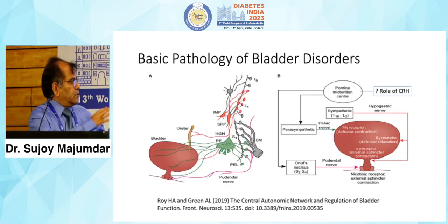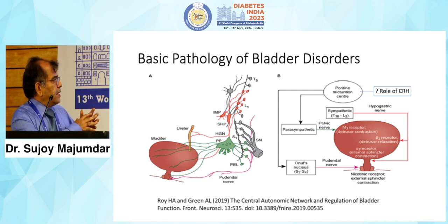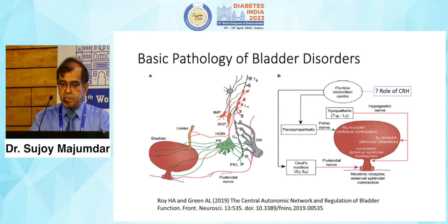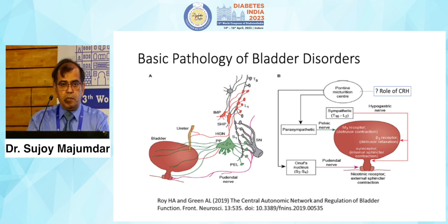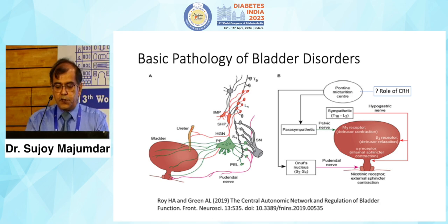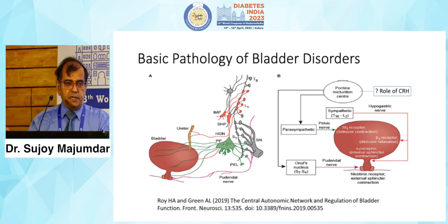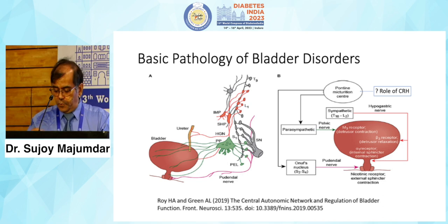There is also a role of corticotropin-releasing hormone (CRH) on the pontine micturition center. If you are CRH deficient, the pontine micturition center ceases to be as effective. There have been some animal studies, but what the implications are in real life, we still do not know.